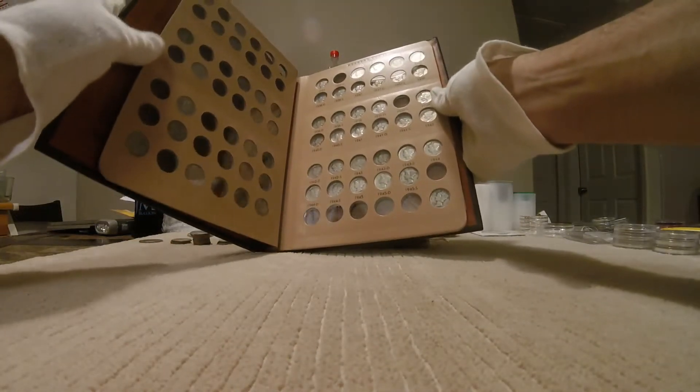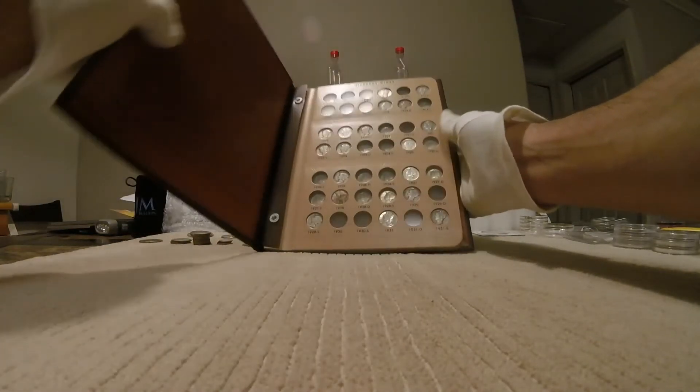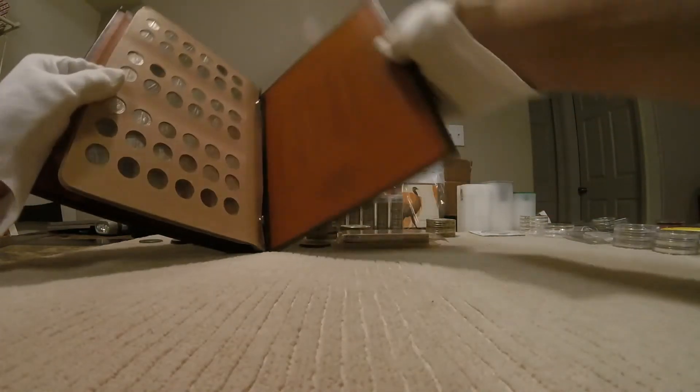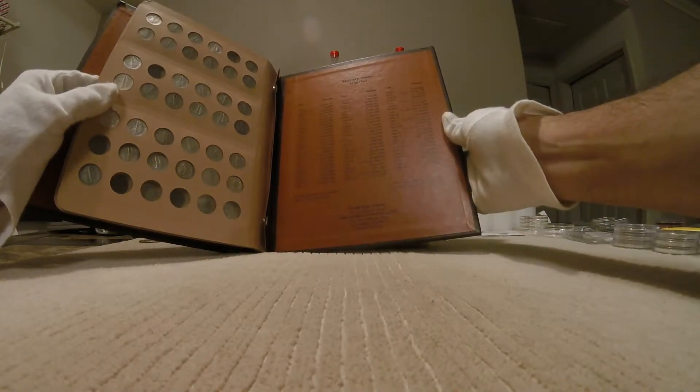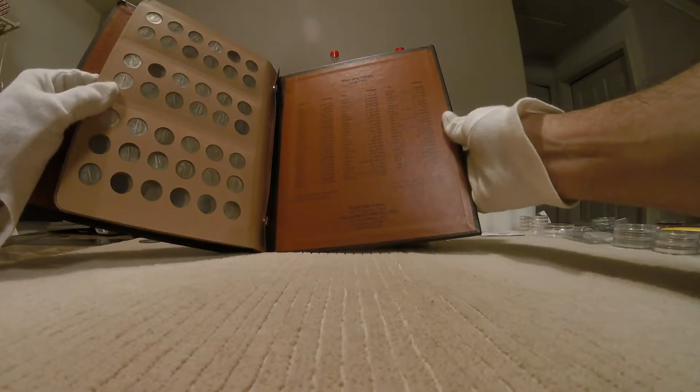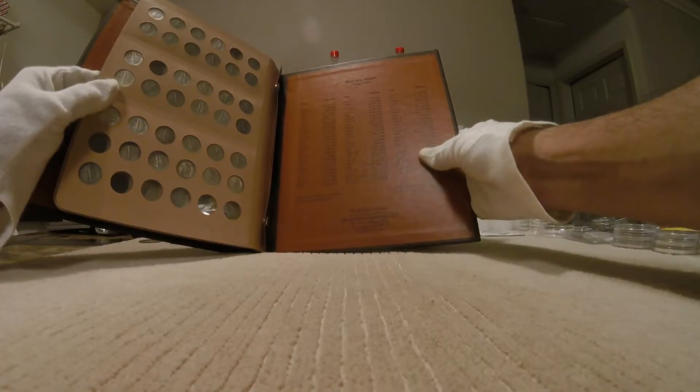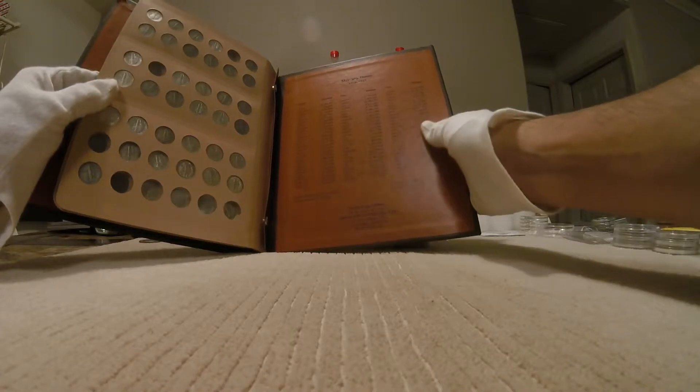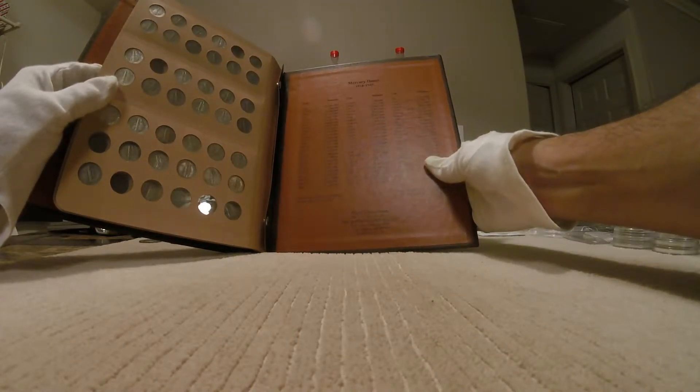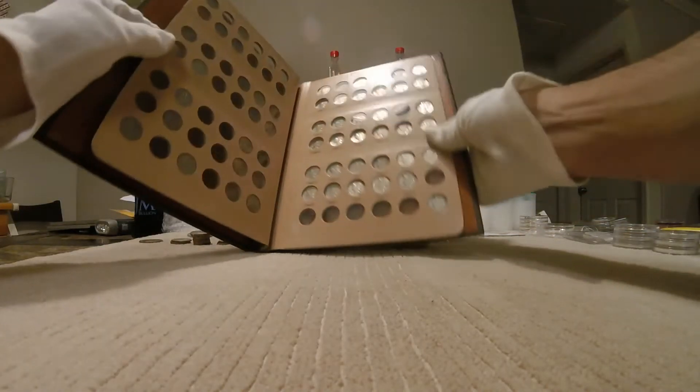Mercury dimes, decided to start picking these up. I picked up this folder on eBay and started having fun with Mercury dimes. Mintages range from in the low 100,000s up to 159 million in 1945. 191 million in 1943. 205 million in 1942. So, Mercury dimes are cool.